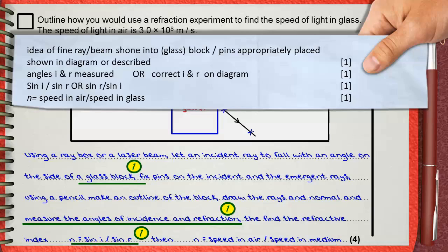The fourth mark of the question is for mentioning anything about refractive index equals the speed of light in air divided by the speed of light in glass to find the speed of light in glass. This is our fourth mark and we got the complete four marks of the question.